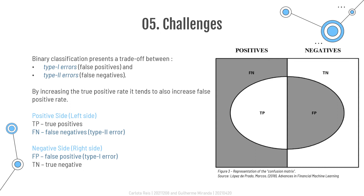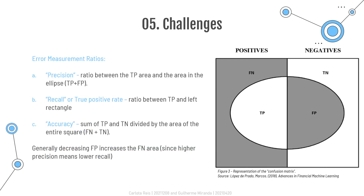This binary classification presents a trade-off problem between type 1 errors (false positives) and type 2 errors (false negatives). In general terms, increasing the true positive rate of a binary classifier will tend to increase its false positive rate. The confusion matrix represents this trade-off. On a set of observations, there are items that exhibit a condition — positives on the left side — and those that do not — negatives on the right side. Inside the positives, there will be true positives and false negatives, while on the negative side there will be true negatives as well as false positives. Therefore, there are two kinds of errors — false positives and false negatives.